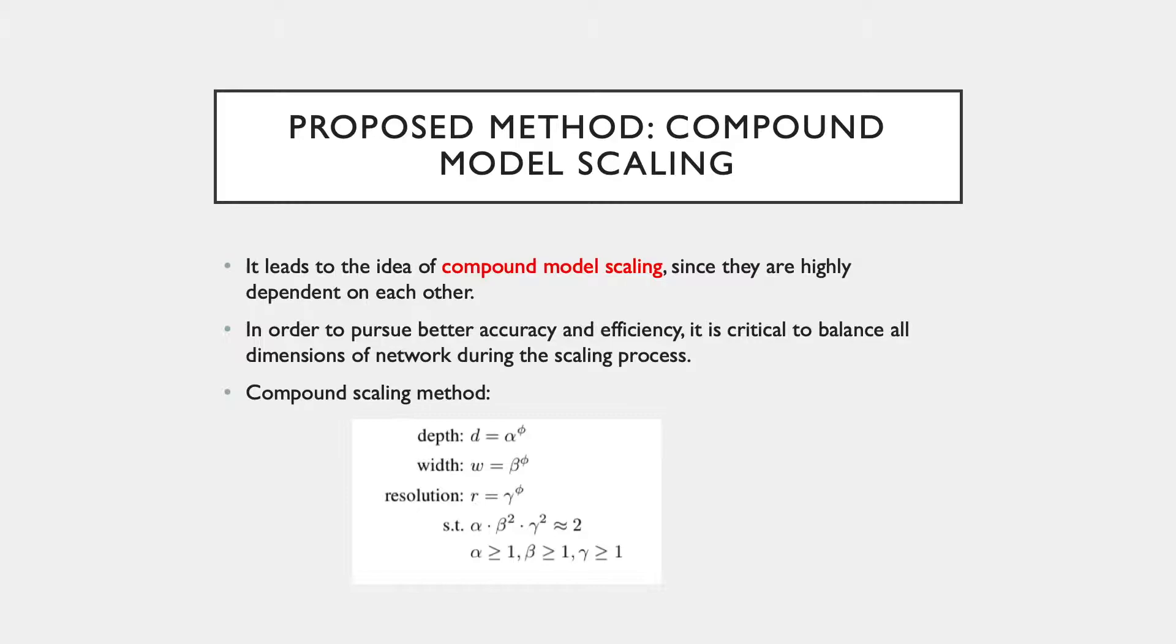Therefore, it leads to the intuition that these three dimensions can be coordinated and balanced with a constant ratio, rather than scaling each dimension with a conventional way. It is very imperative to balance all three dimensions of the network during this scaling process. In this paper, they propose a new compound scaling method which uses a compound coefficient to uniformly scale the network with depth, width, and resolution.